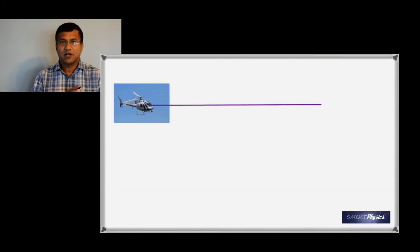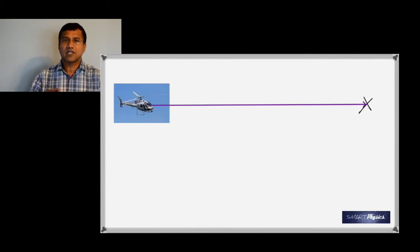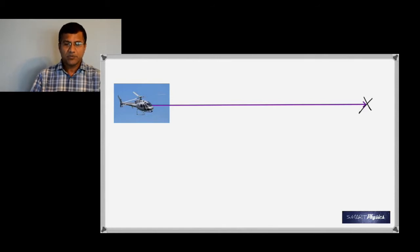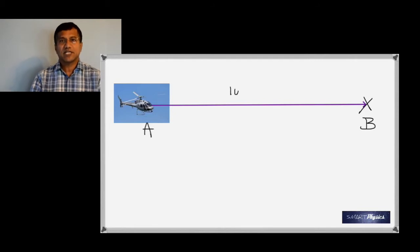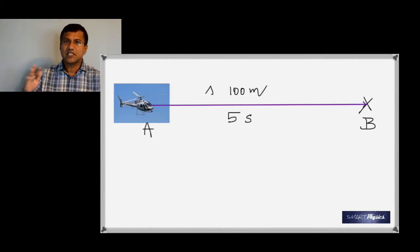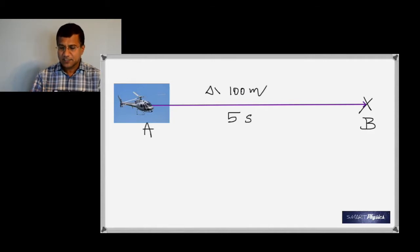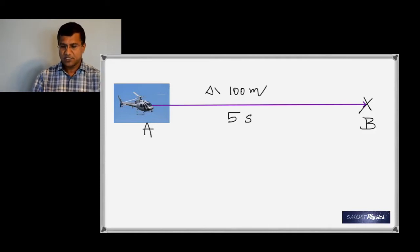What you have in this diagram is a helicopter flying in a straight line from one point to the other. It goes from A to B, and the distance is 100 meters, done in five seconds. Since it's flying in a straight line, distance and displacement are the same in this case.